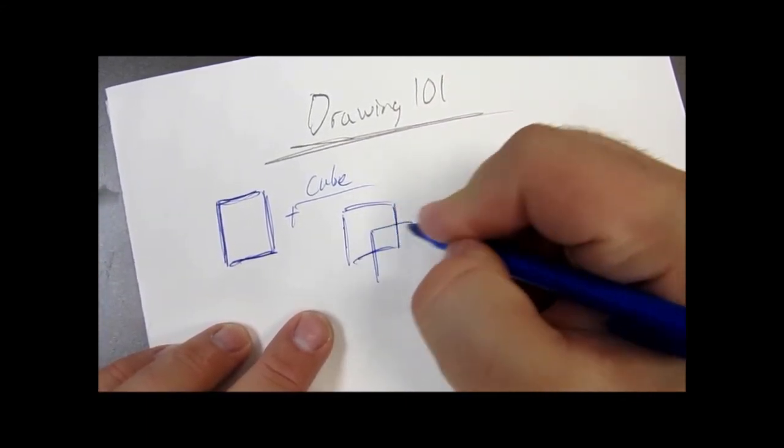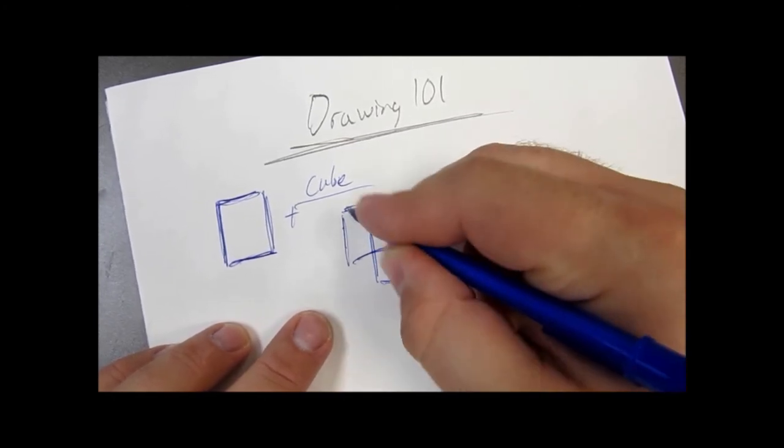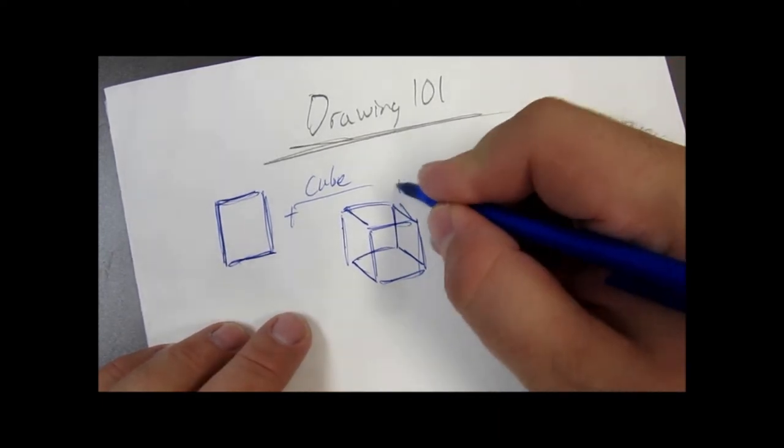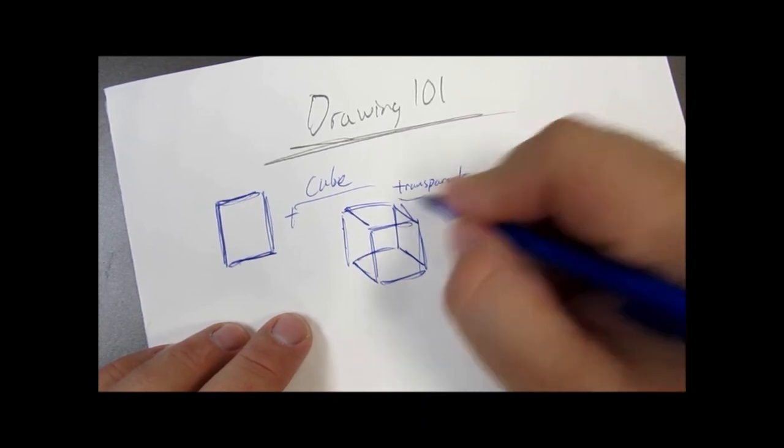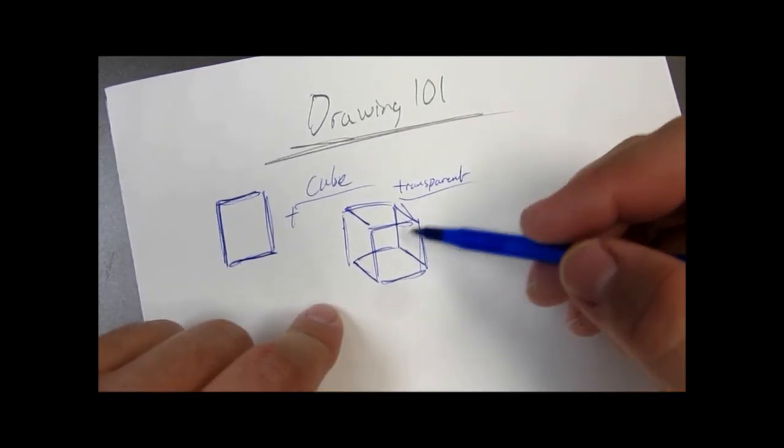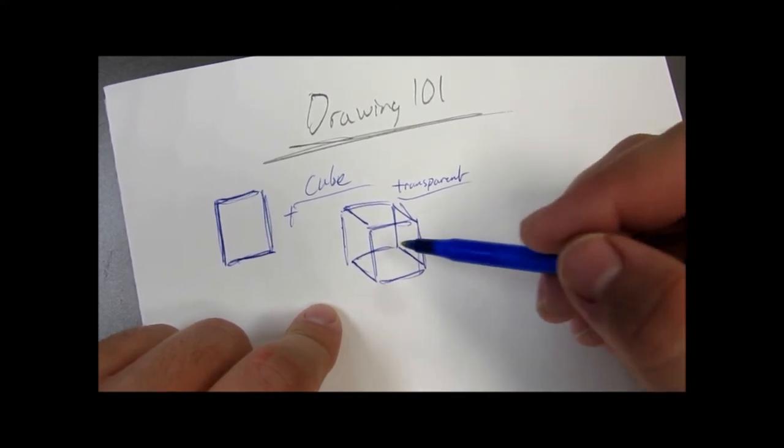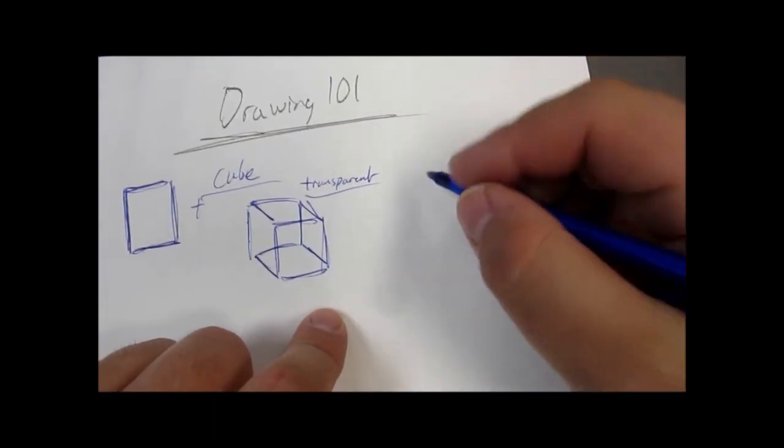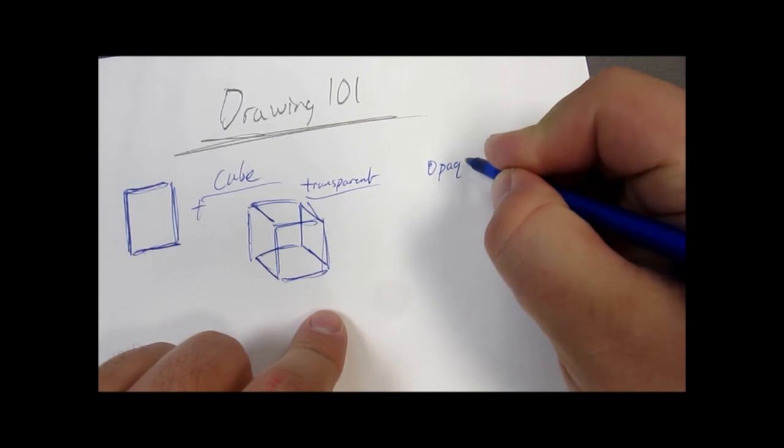Now I'll tell you up front, the cube is the hardest thing that you are going to draw. What I've done here is I've taken two squares, overlaid them, and connected the four corners to give it a three-dimensional viewpoint. Now this viewpoint is a transparent cube. For the transparent cube, you can see through the cube—that's the essential of a transparent cube.